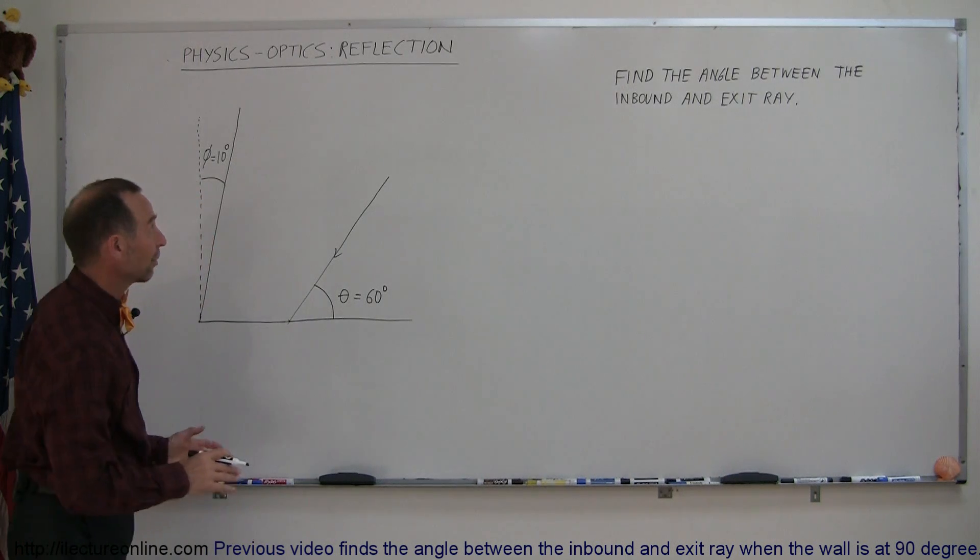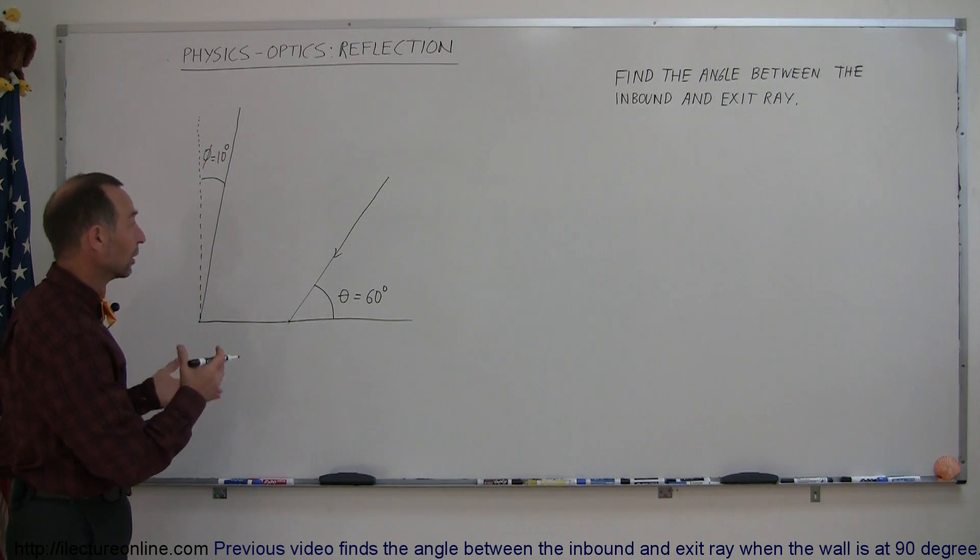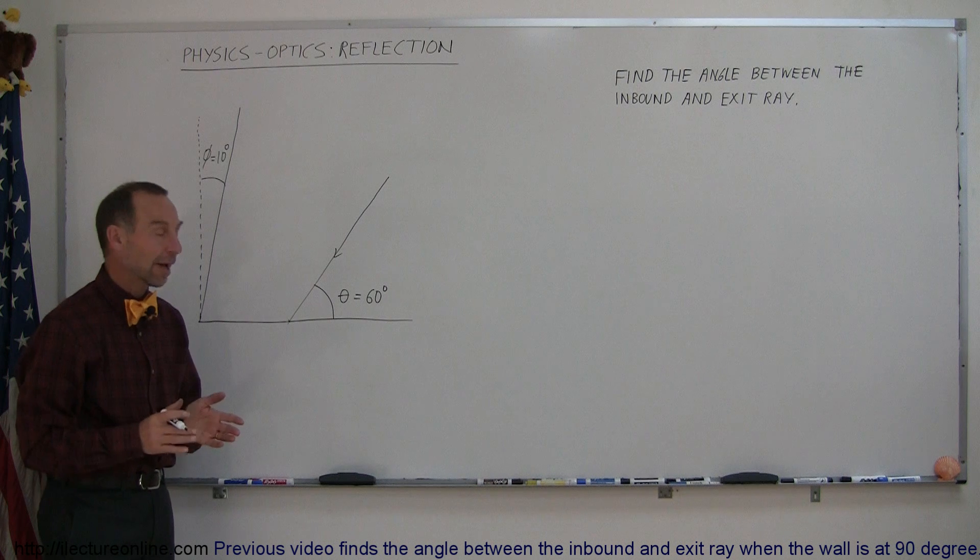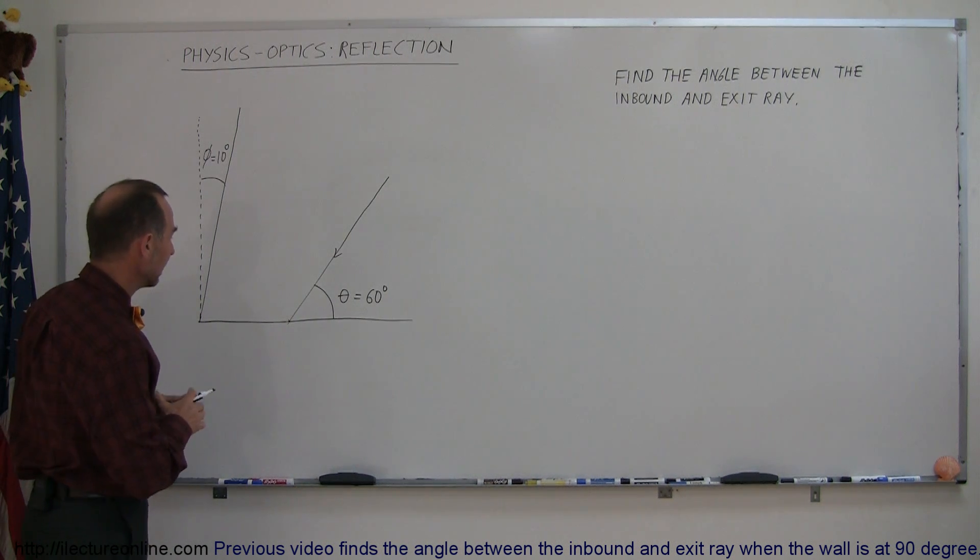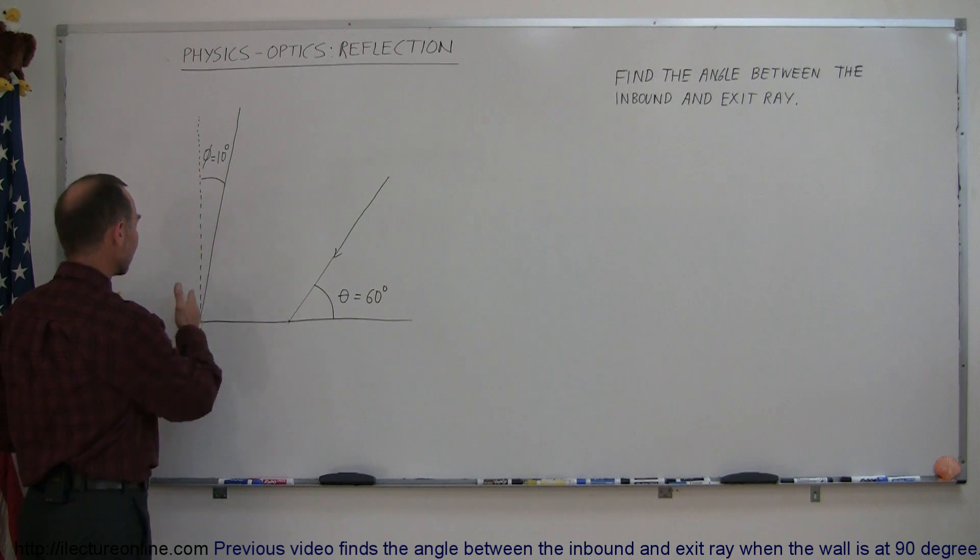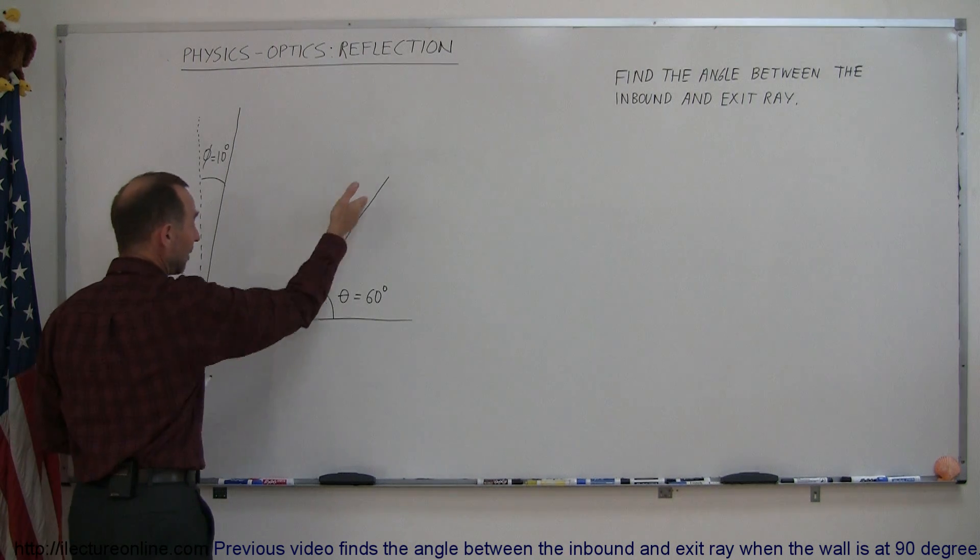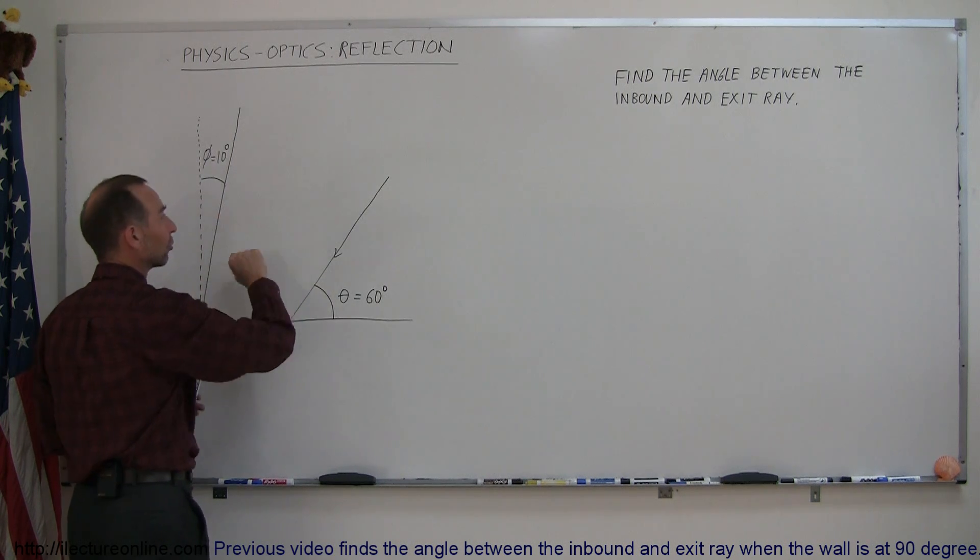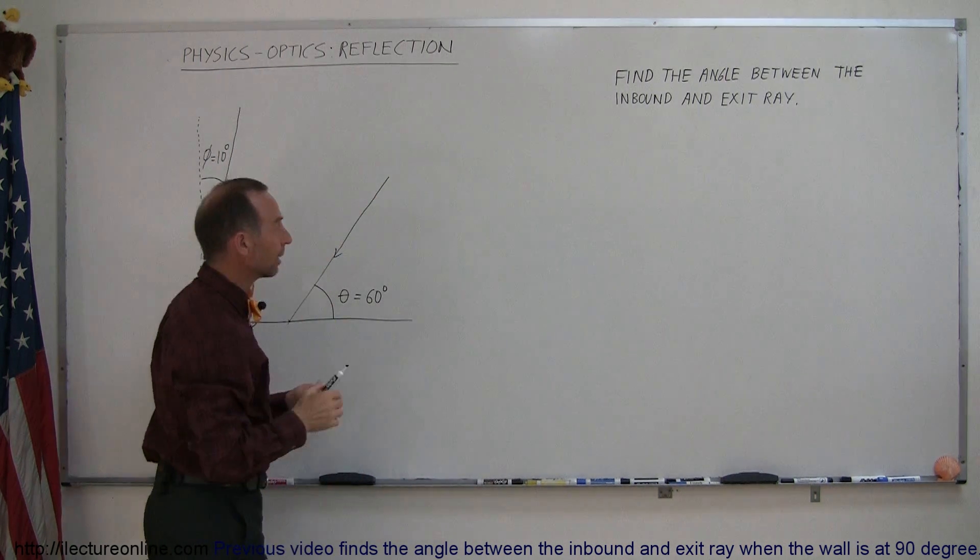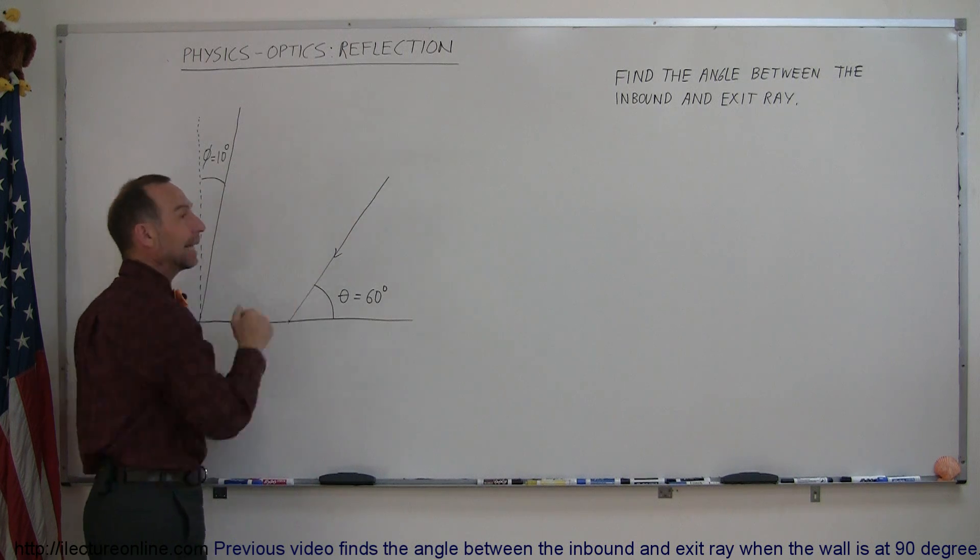Welcome to our lecture online and here's example number two of how to deal with reflection. Here we have something that's not quite a corner reflector so it's a little bit more complicated. There's not a right angle here, it's not a 90 degree angle. We have an inbound ray and as it bounces off the first surface and as it bounces off the second surface we want to find the angle between the inbound ray and the exiting ray.